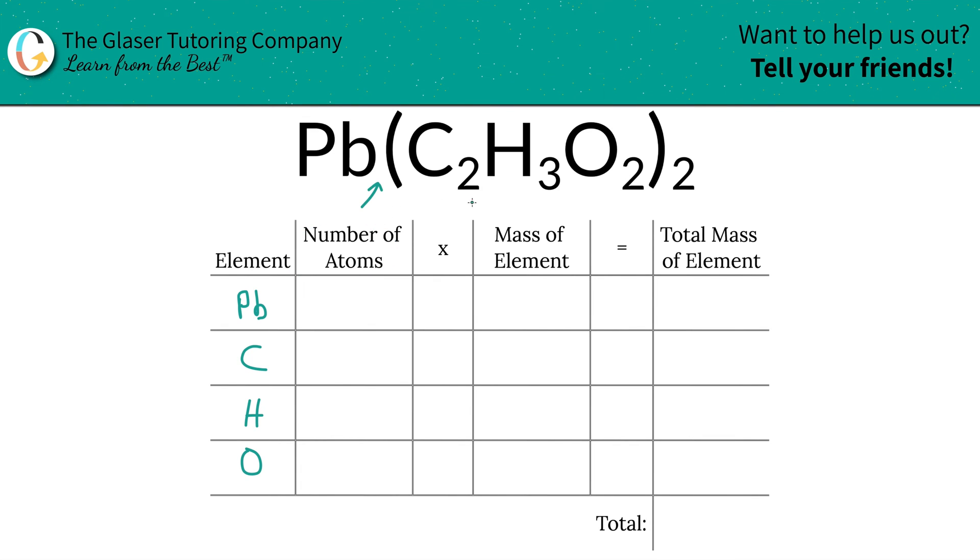Then we're going to identify the number of atoms, and that's where the subscripts come into play. Now if you don't see a subscript there at the bottom of a particular element, just put in a 1. So there's only one lead in the compound. That's because that's what its subscript is, and there is no parenthesis outside of it which to multiply by.